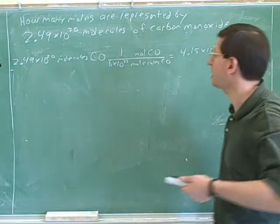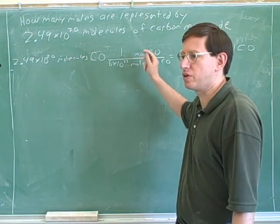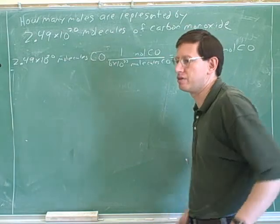So that was a pretty simple one. Okay, good. So again, we're going from individuals to the group. So that's when we use the Avogadro's number. Good.